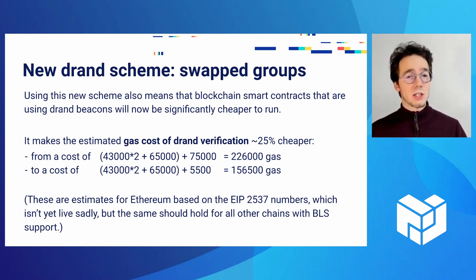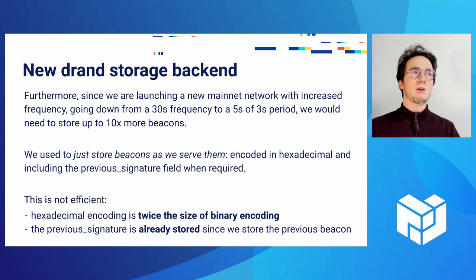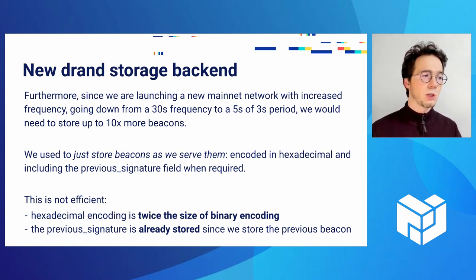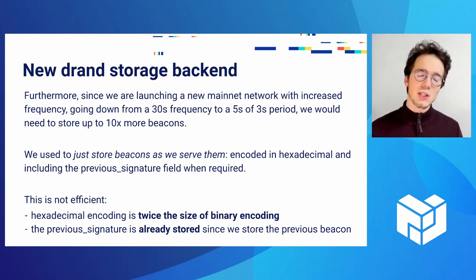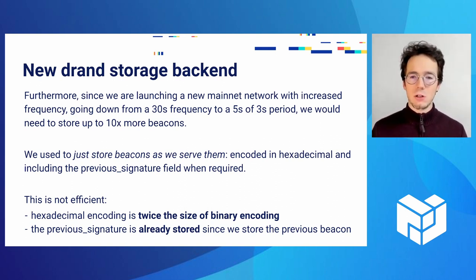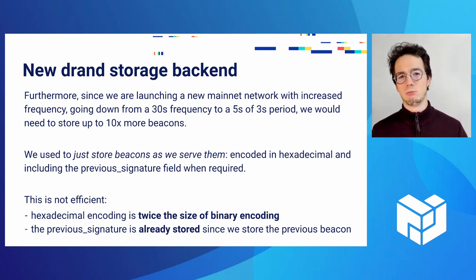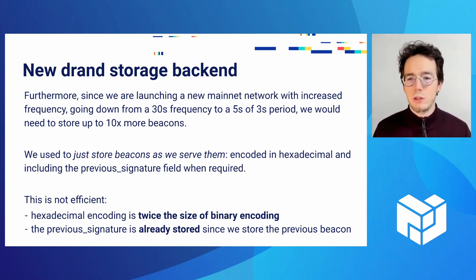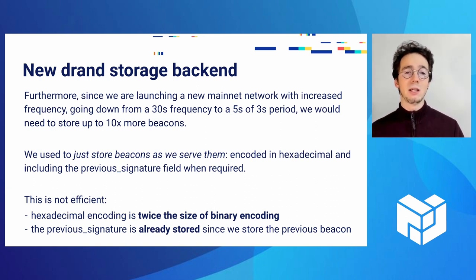We also didn't stop there. We want to launch a new network for DRUN to use the new signature scheme, and while we're launching a new network, we thought we could do more. One feedback from DRUN users was that 30 seconds is long. While Filecoin block time is exactly 30 seconds and fine for most Filecoin users, people running applications that need randomness more frequently are constrained by that 30-second frequency. For example, a casino might want to run a new draw every three or five seconds, so we're planning to increase the frequency to five or three seconds.